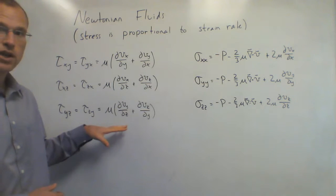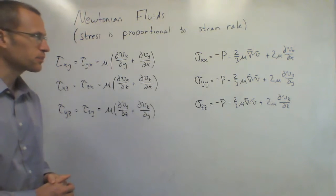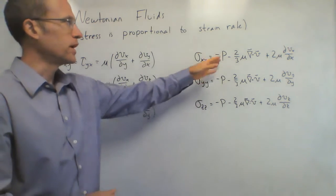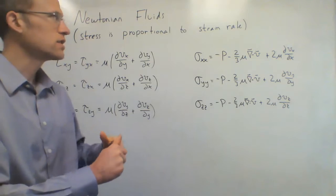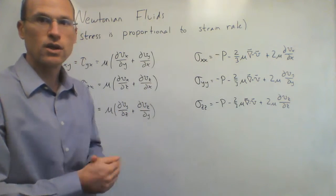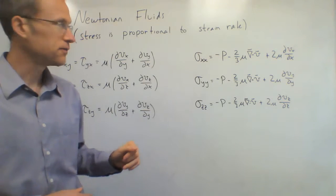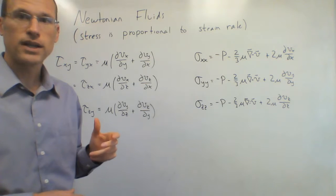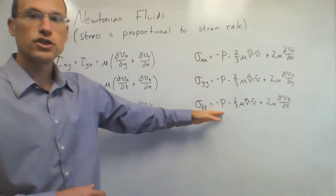We've now related shear stresses to velocities, which are already in our equation, essentially eliminating shear stress as a separate variable. Similarly for the normal stresses, these are related to pressure. Pressure is a normal stress, and any velocity hitting that surface causes a stress. So the normal stress terms involve dVx/dx and are related to velocity and pressure. We haven't eliminated variables but have eliminated components x, y, and z, relating everything just to pressure and velocity.